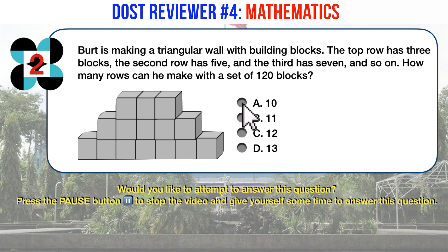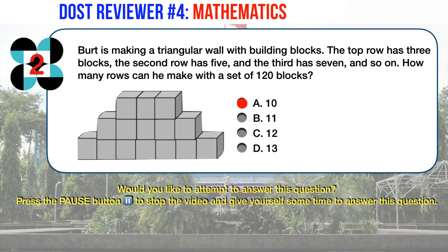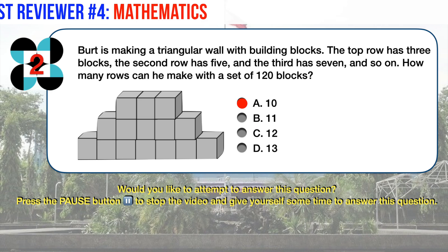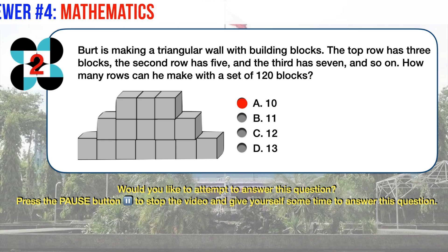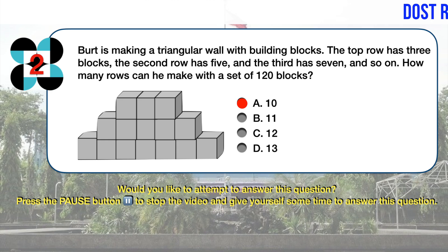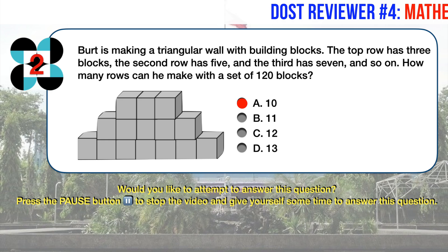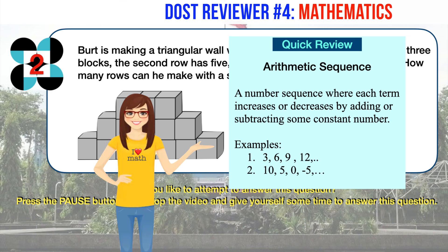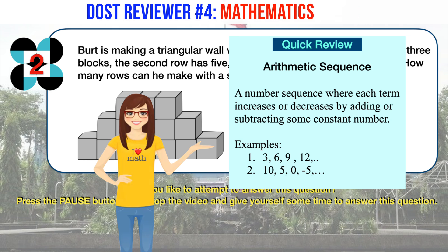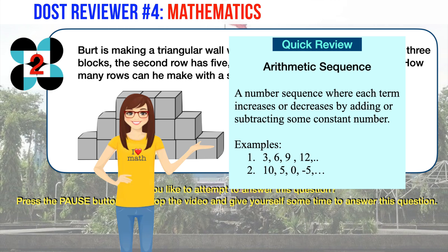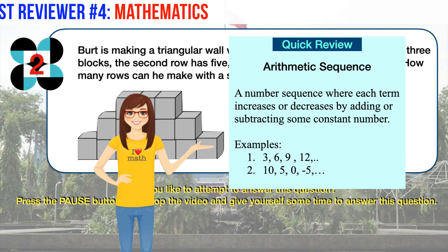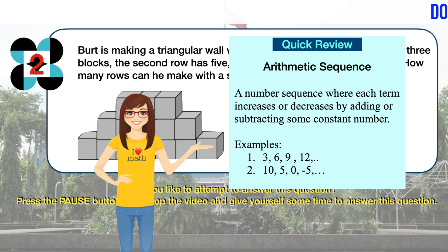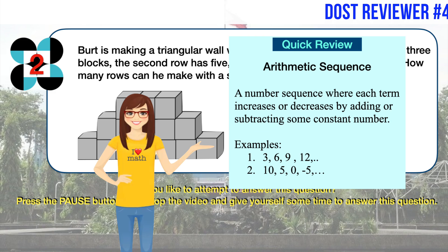The correct answer is A, 10. This is a number sequence problem. The sequence defined in the problem is 3, 5, 7, and so on. From the first three terms we should quickly recognize this as a simple arithmetic sequence — a number sequence where each term increases or decreases by adding or subtracting some constant number. The question translates to: how many terms does the arithmetic sequence have if the sum of the sequence is 120?